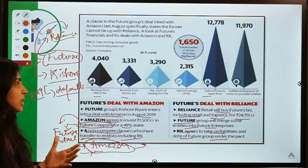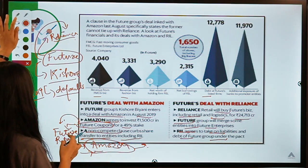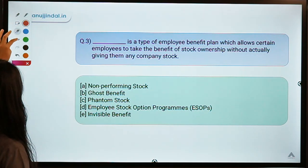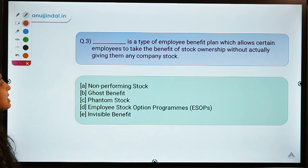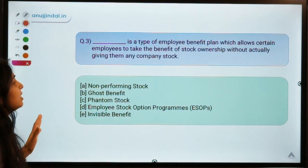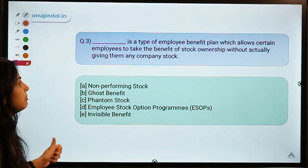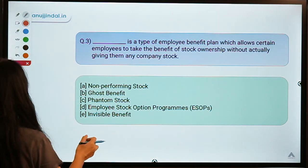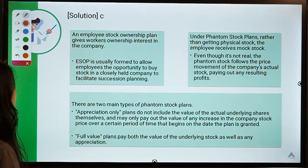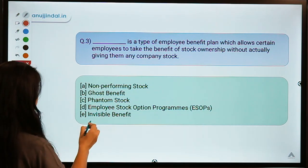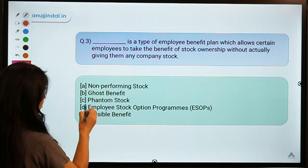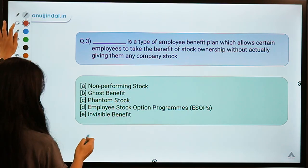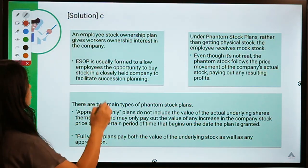Here is question number three: 'Dash is a type of employee benefit plan which allows certain employees to take the benefit of stock ownership without actually giving them any company stock.' The correct answer is option C — Phantom Stock. Before understanding phantom stock, let us first understand what ESOPs — Employee Stock Ownership Plans — are.